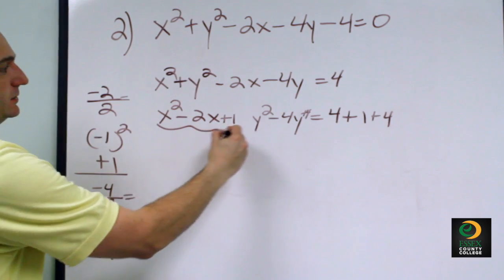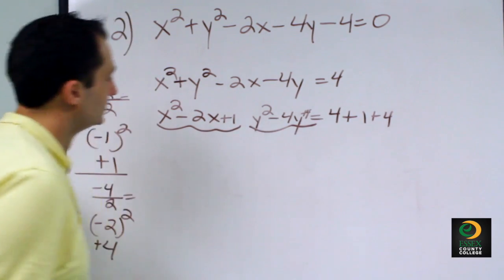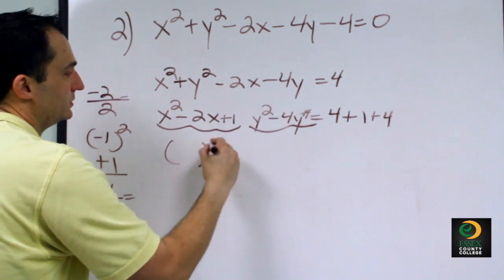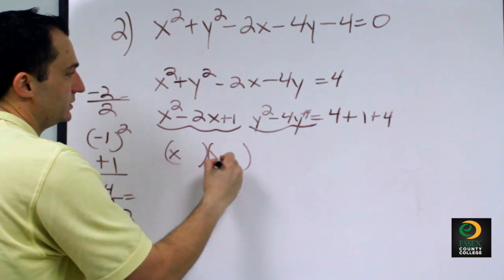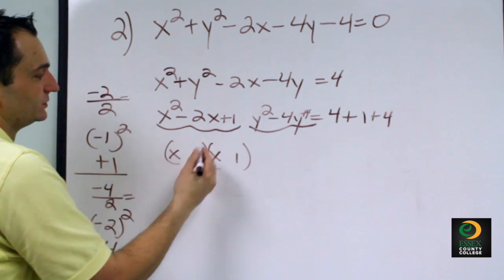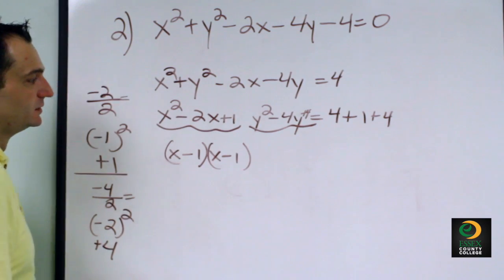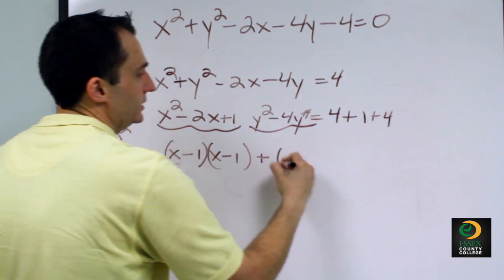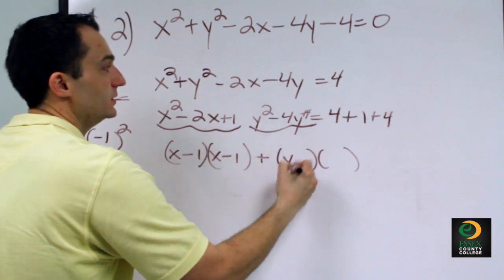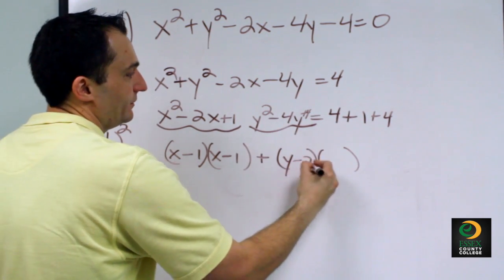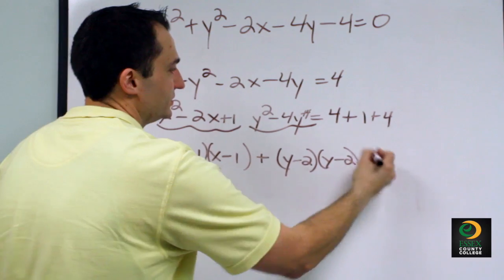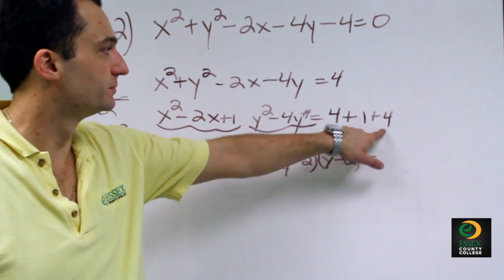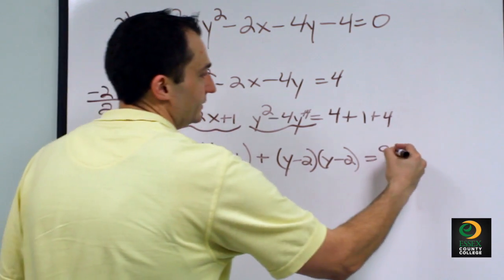Now we refactor each of these terms. Factors of 1 that make 2 is simply 1, and we want them to be negative, so we get x minus 1, x minus 1. Plus factors of 4 that make 4 are 2, and we want them to be negative, so it's y minus 2, y minus 2. Then adding up: 4 plus 1 plus 4 gives us 9.